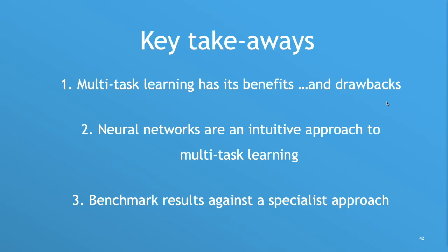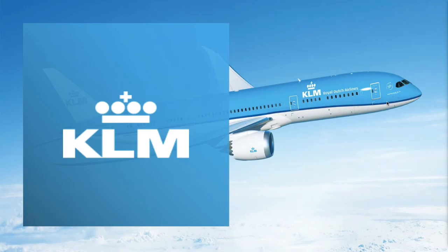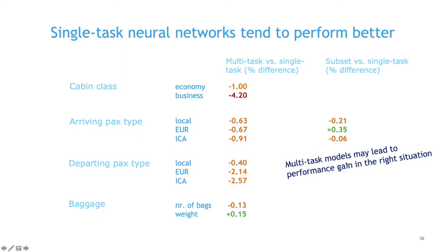Thank you. Any questions? From the audience: your multitask model looks really good, but in the last performance picture it was on average maybe 1-2% worse than single-task — can you also express this in money? Because I imagine there's a lot of money involved and 1% could be quite a lot. The speaker responds: it's always a difficult question to translate to money when you ask stakeholders. But we were a bit shocked when we saw this last week, because we do have to investigate what this means. For most targets it would be alright, but for business class it is indeed potentially a lot of money — we're talking potentially millions, though I'm not sure I'm allowed to say exactly.